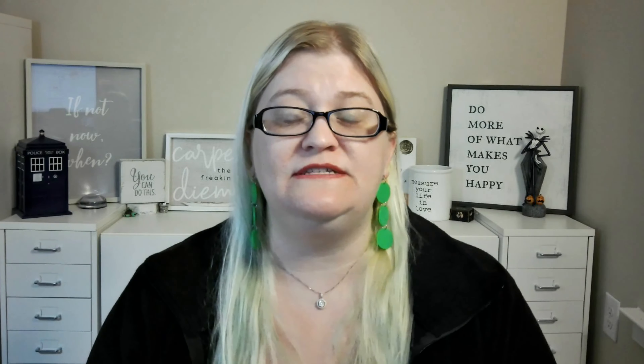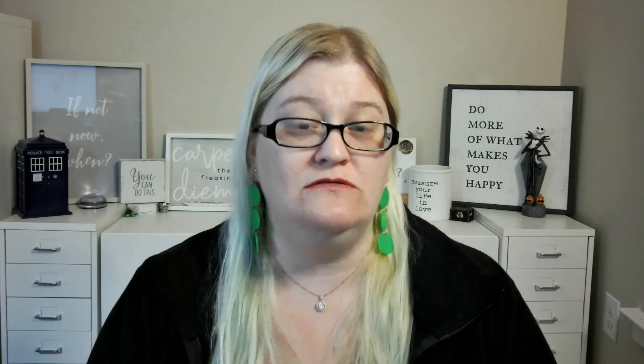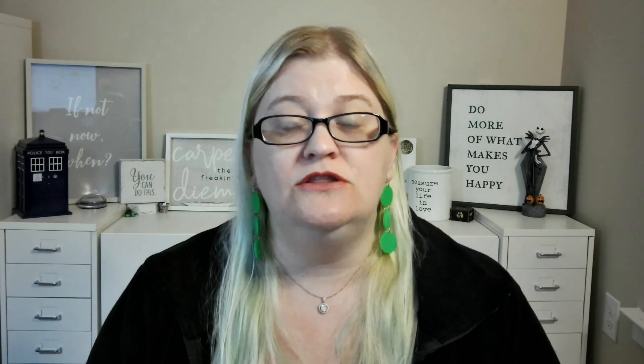The second option is to remake one of our existing videos. This is where we're going to go to our own channel, look at the stats, and determine what video we might want to remake that did well previously.